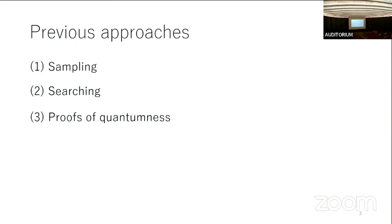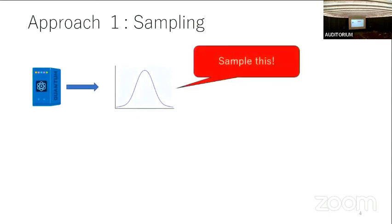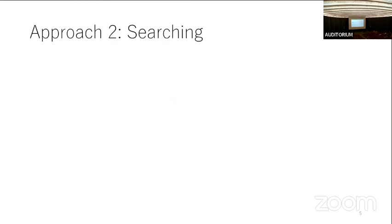The first approach is sampling. The goal is to sample some distribution. There is an efficient quantum algorithm that outputs some bit string according to some distribution, and classically it's not possible — no PPT algorithm can sample this distribution. Any classical efficient algorithm's output distribution is far from this one, but the quantum algorithm can sample it. This is sampling advantage.